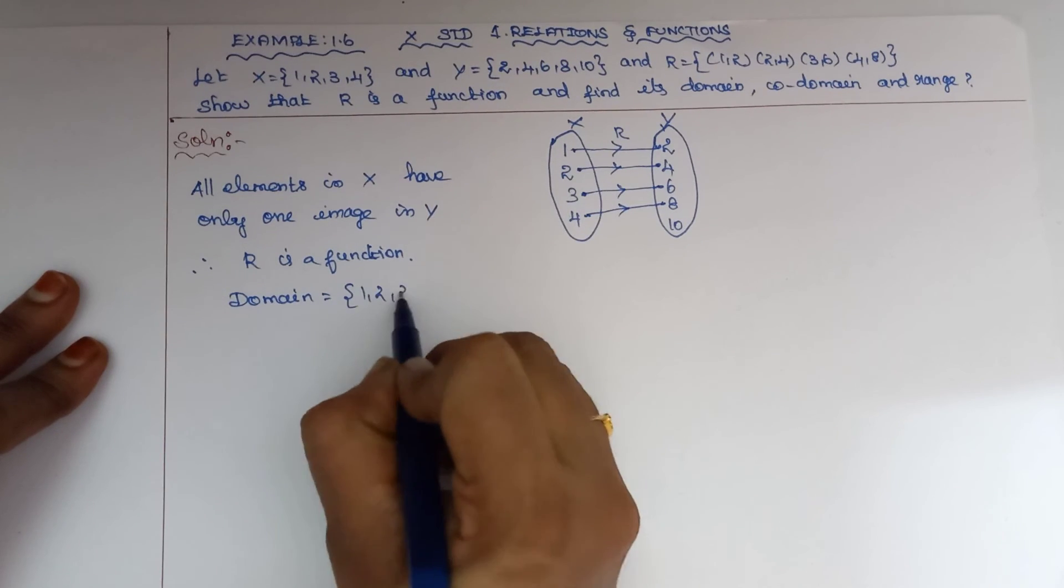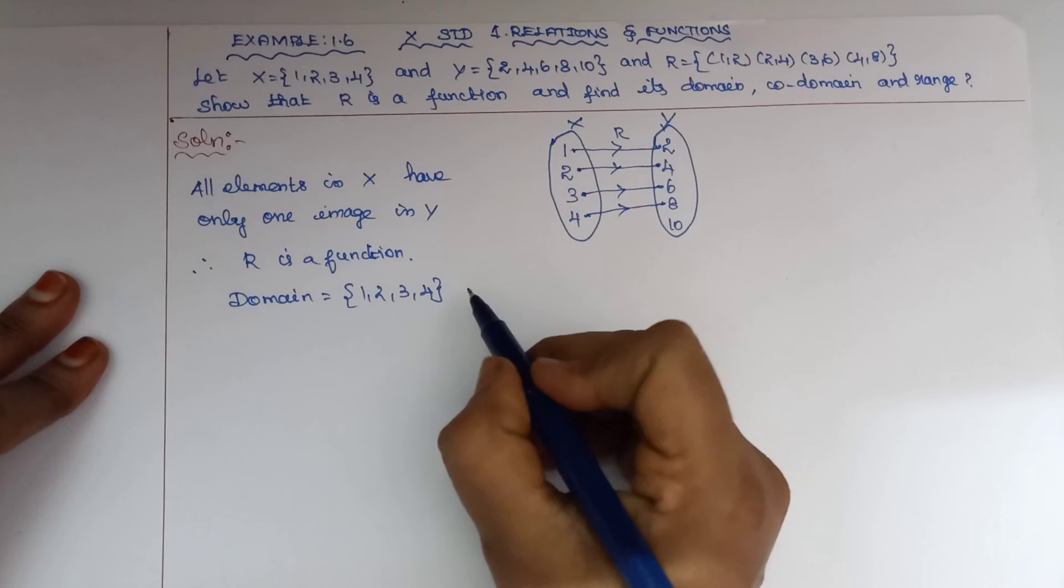The first set of elements is the domain: 1, 2, 3, 4. Next, co-domain.